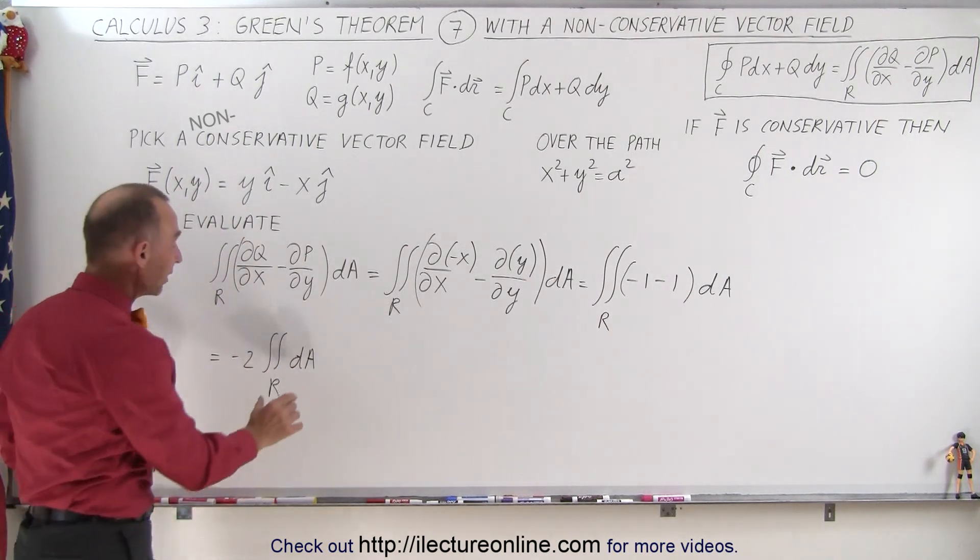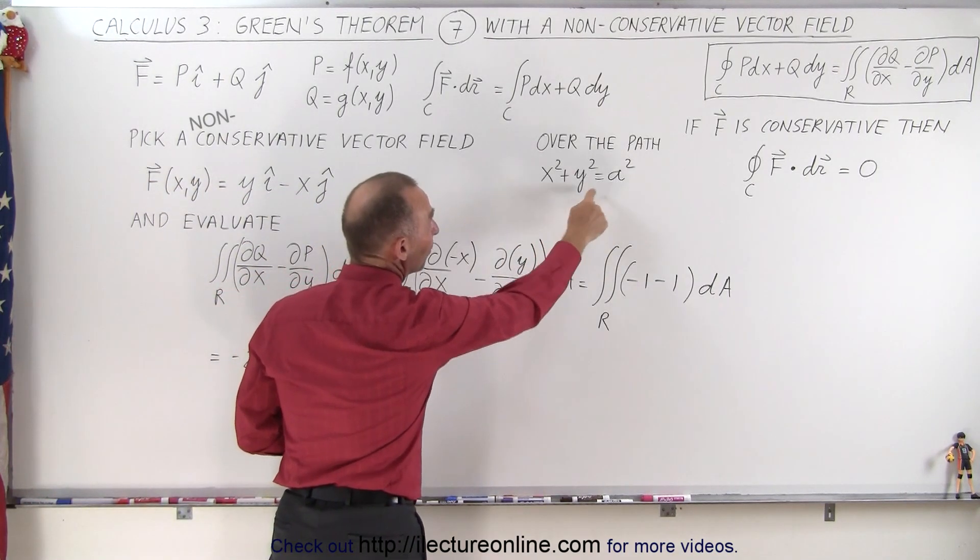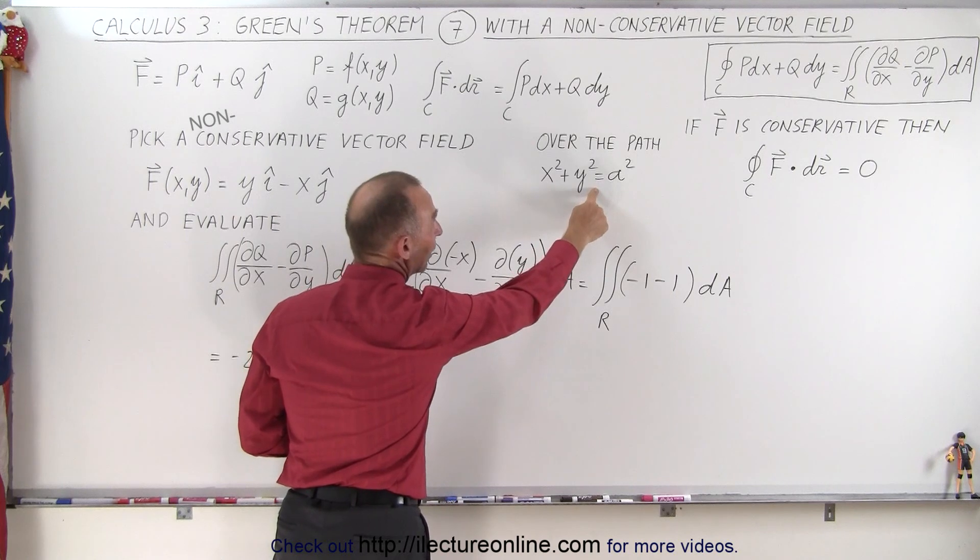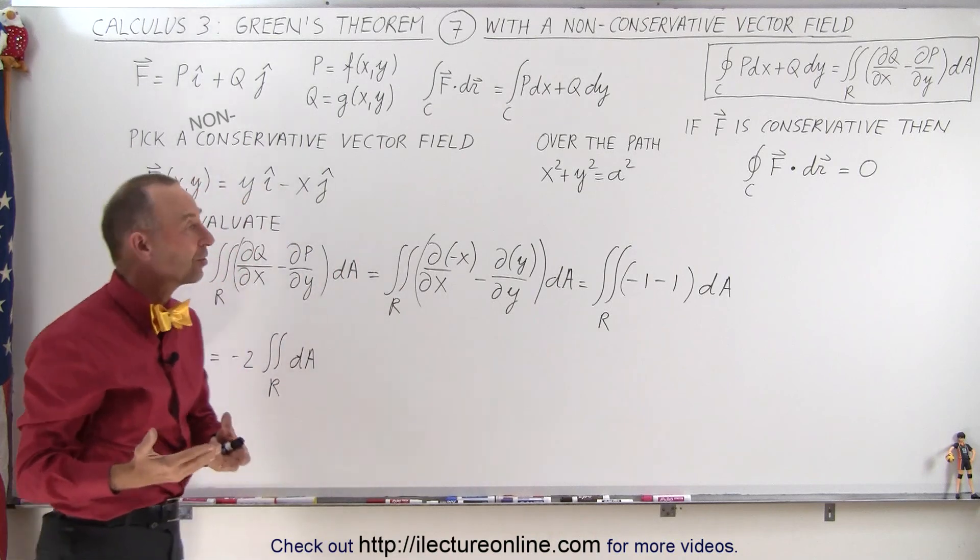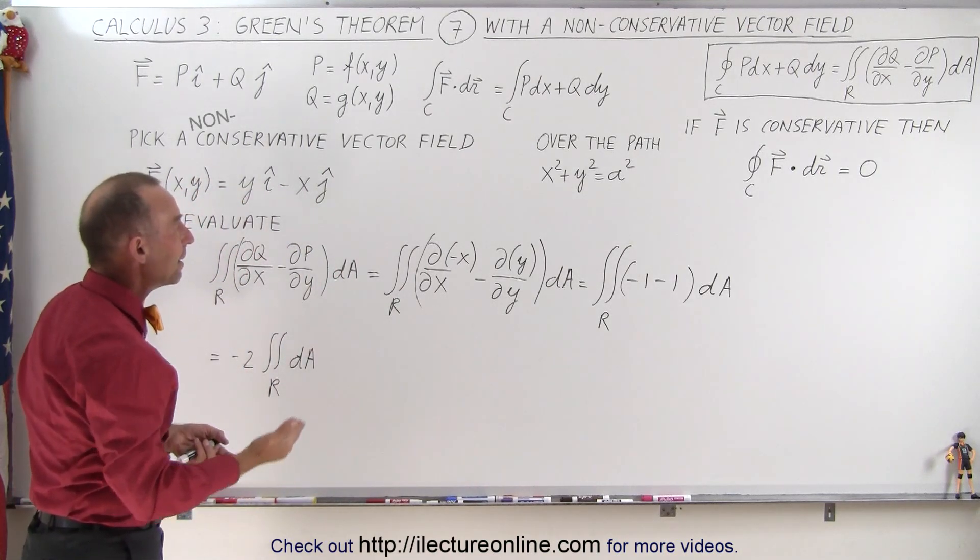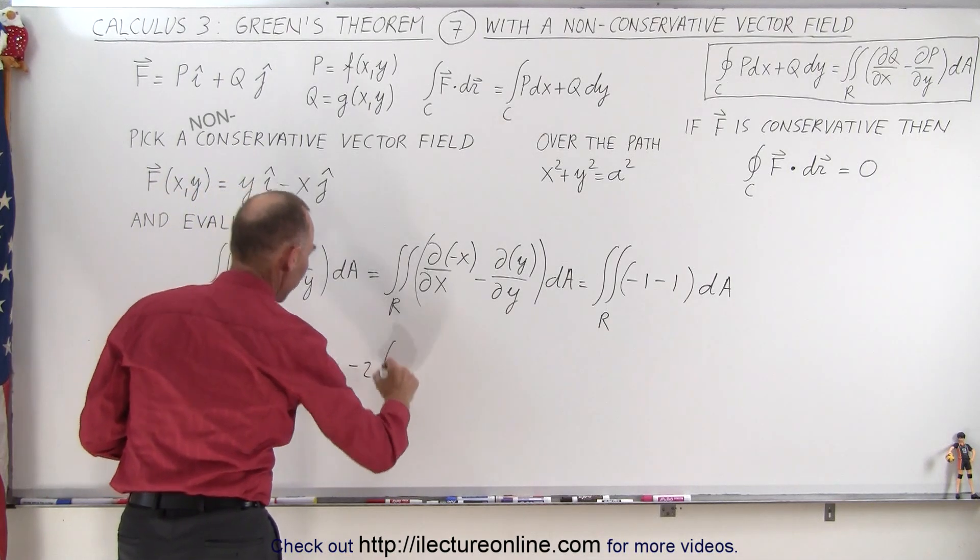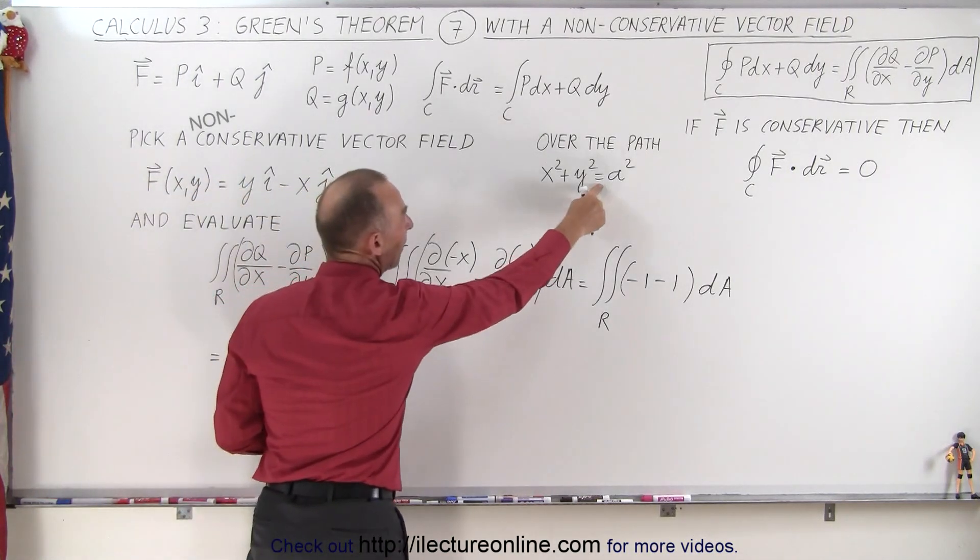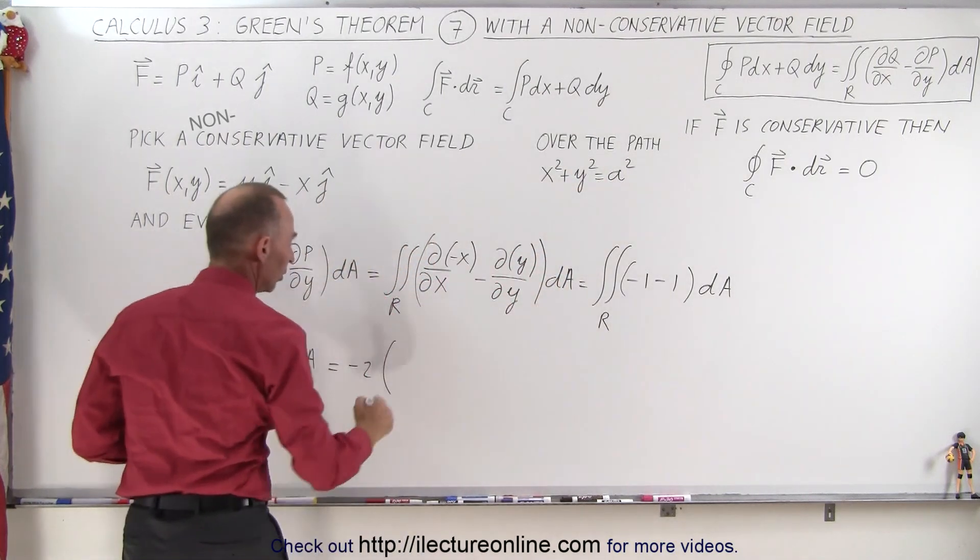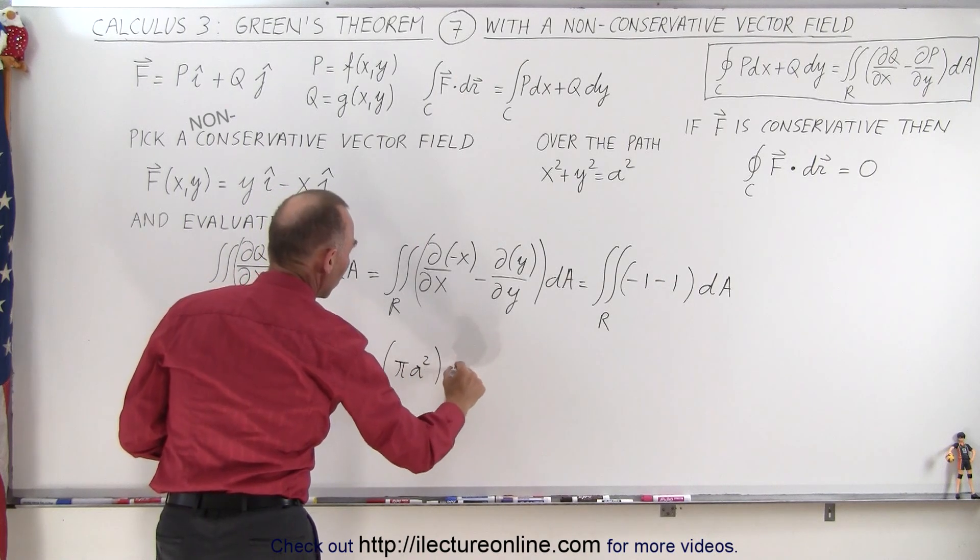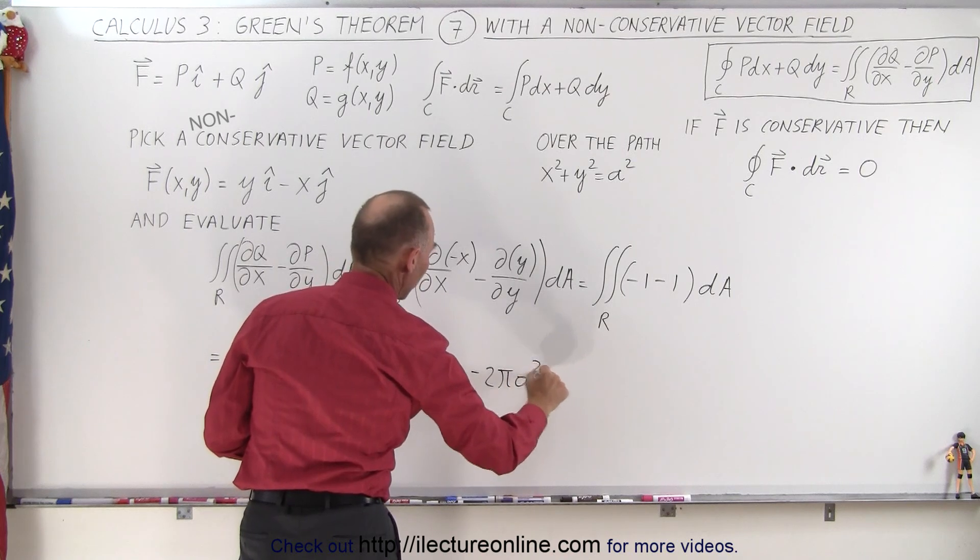We said here that the integral over the region is going to be the integral over the region enclosed by this particular equation. Which means that the area of this region is simply going to be the area of the circle of radius a, and that area is going to be pi a squared. So the area enclosed by this path is the circle of pi a squared. Which means that this then becomes minus 2 pi a squared.